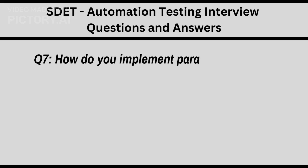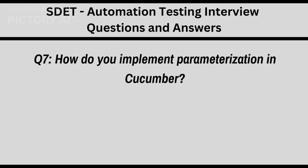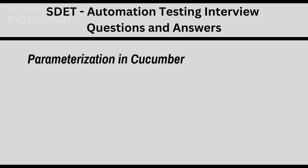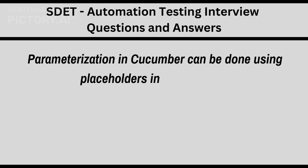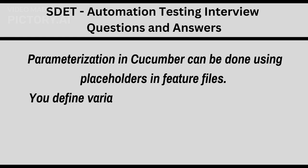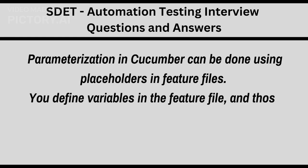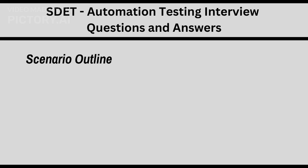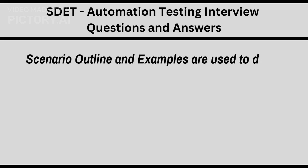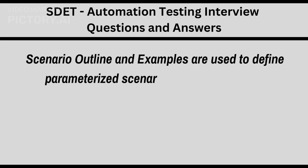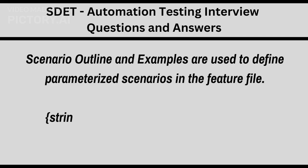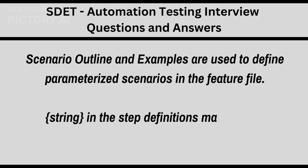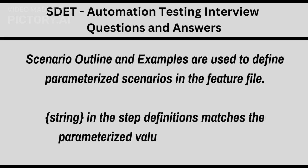Q7: How do you implement parameterization in Cucumber? Parameterization in Cucumber can be done using placeholders in feature files. You define variables in the feature file and those values are passed to step definitions. Scenario Outline and Examples are used to define parameterized scenarios in the feature file, and the string in the step definitions matches the parameterized values in the scenario.